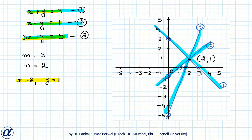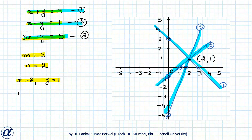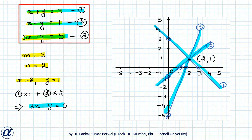This system is consistent despite m being greater than n. Equation 3 can be obtained by multiplying equation 1 by 1 and adding equation 2 multiplied by 2, giving 3x minus y equals 5 — which is equation 3. So these three equations are not linearly independent; the third is a linear combination of equations 1 and 2.